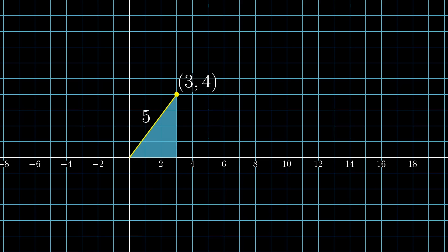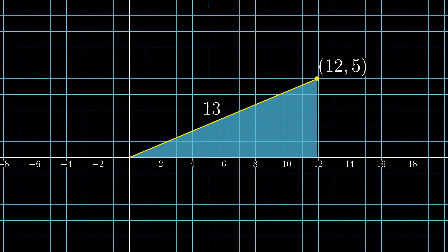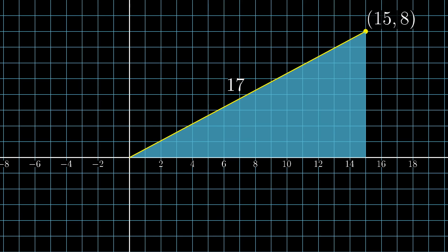For example, the point 3-4 is a distance 5 away from the origin, and the point 12-5 is a distance 13 away from the origin. The question of finding Pythagorean triples is completely equivalent to finding lattice points which are a whole number distance away from the origin.